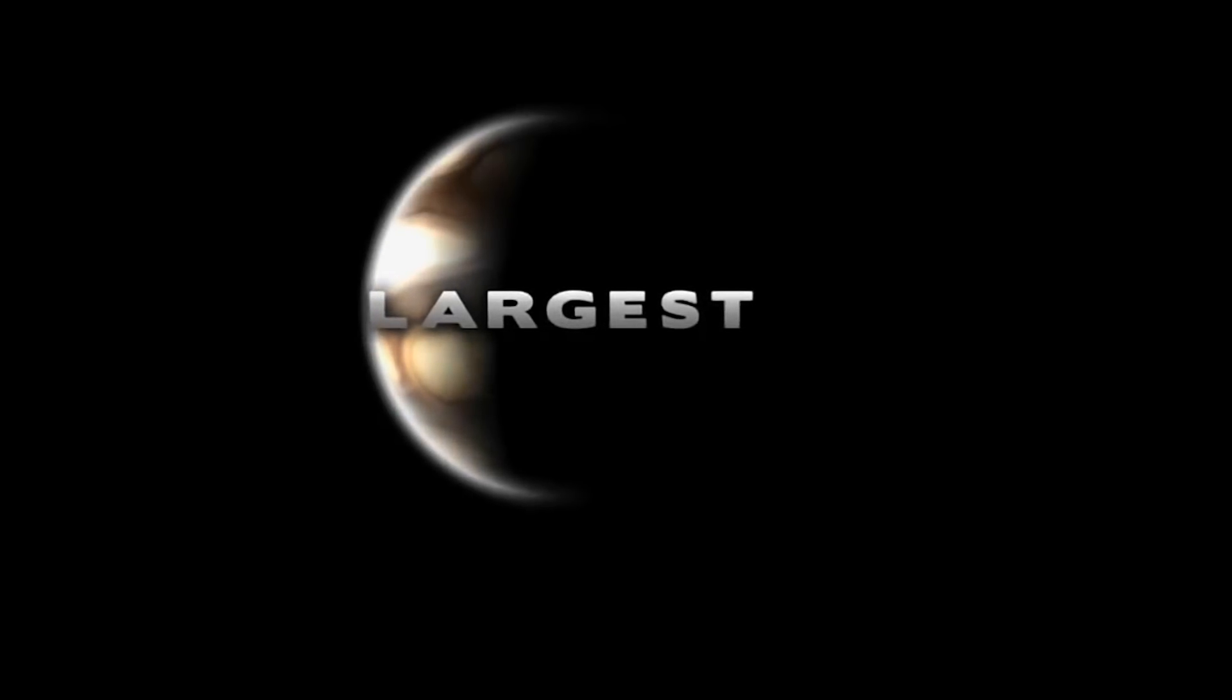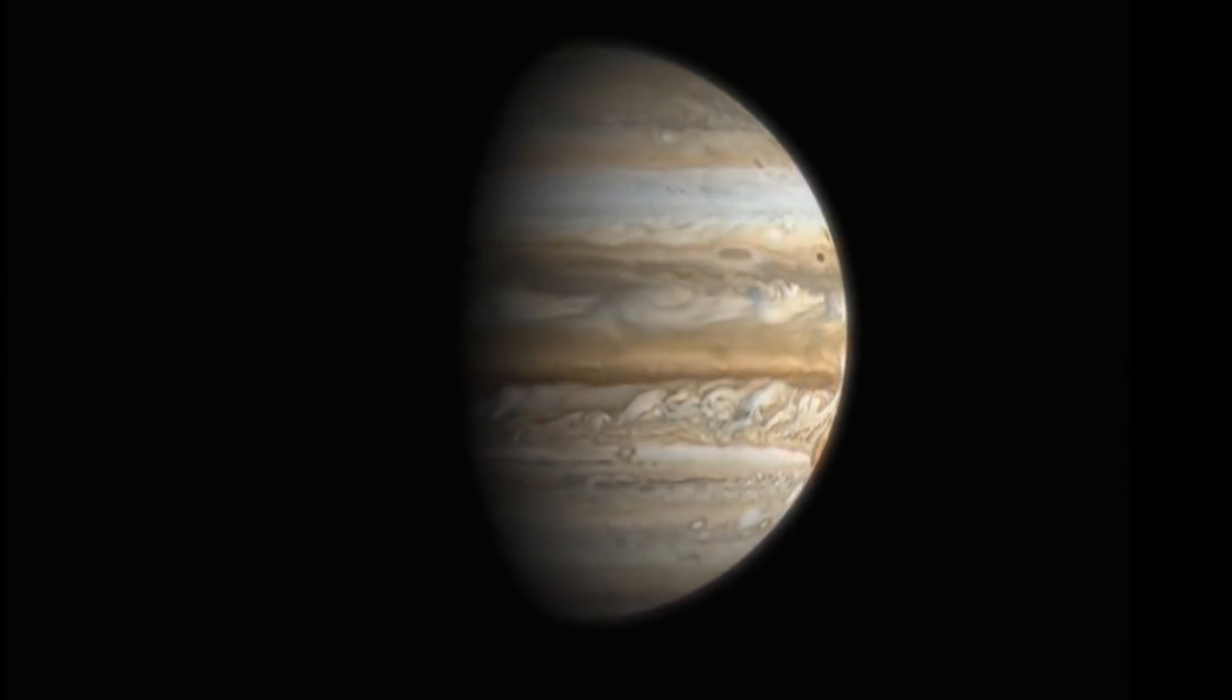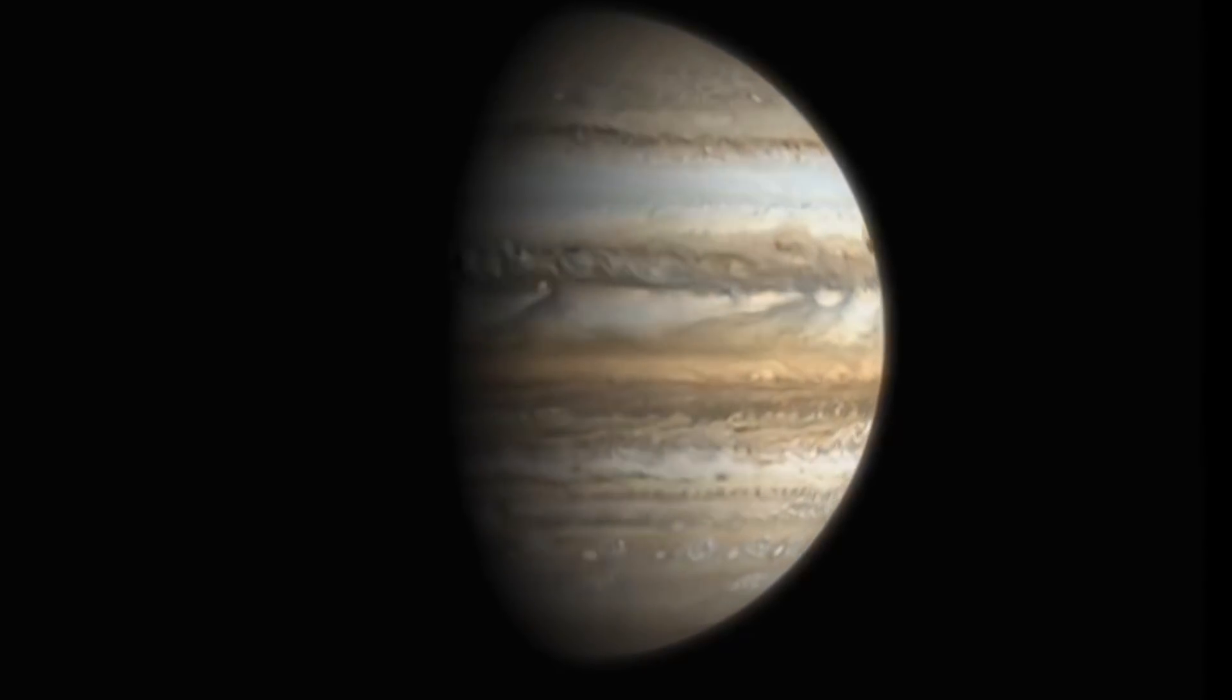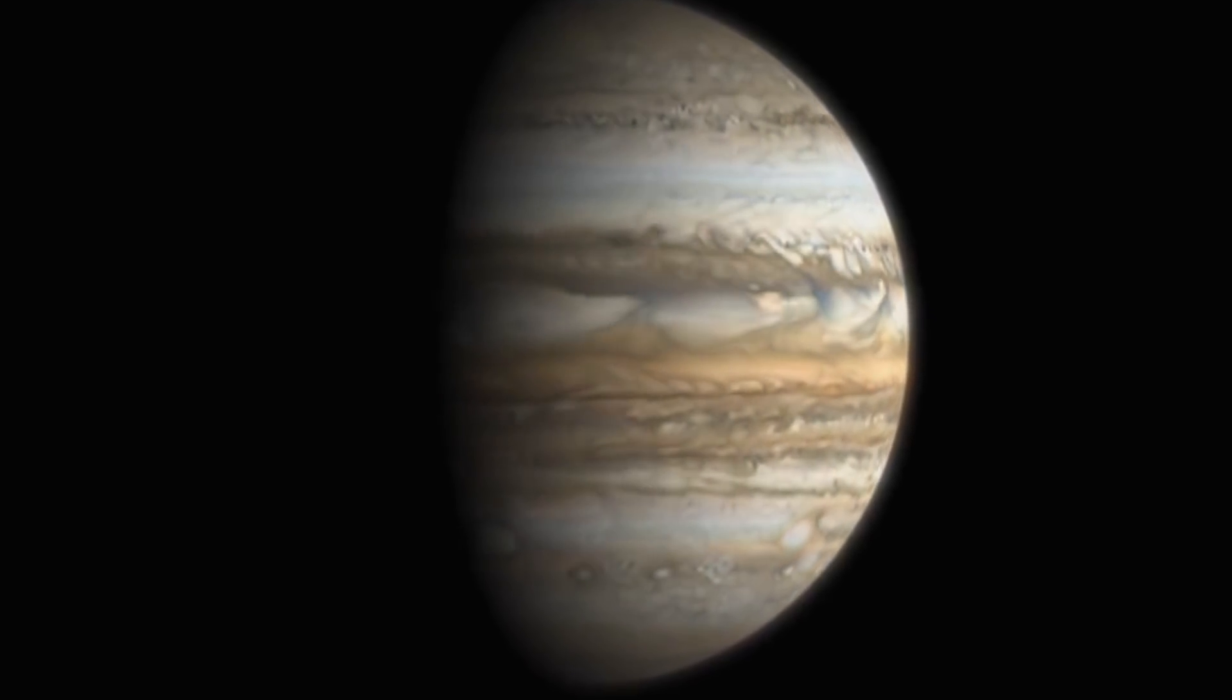Jupiter is a gas giant and the largest planet of the solar system. It is made up of gaseous substances like hydrogen and helium, with no solid surface, just endless trace of atmosphere.